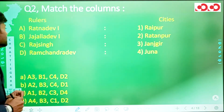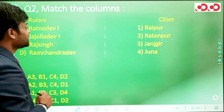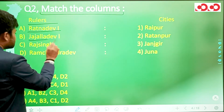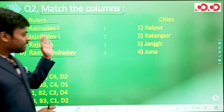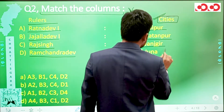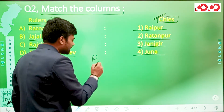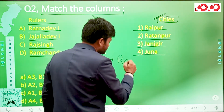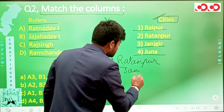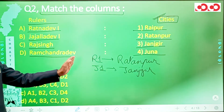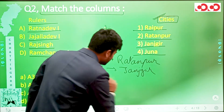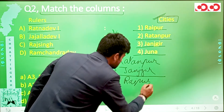Question 2 again asks us to match the columns with rulers and the cities they populated. Rulers are Ratnadev, Jajaladev, Raj Singh, and Ramchandadev. Cities are Raipur, Ratanpur, Janjagir, and Juna. As already discussed, Ratnadev 1 populated Ratanpur and Jajaladev 1 populated Janjagir.